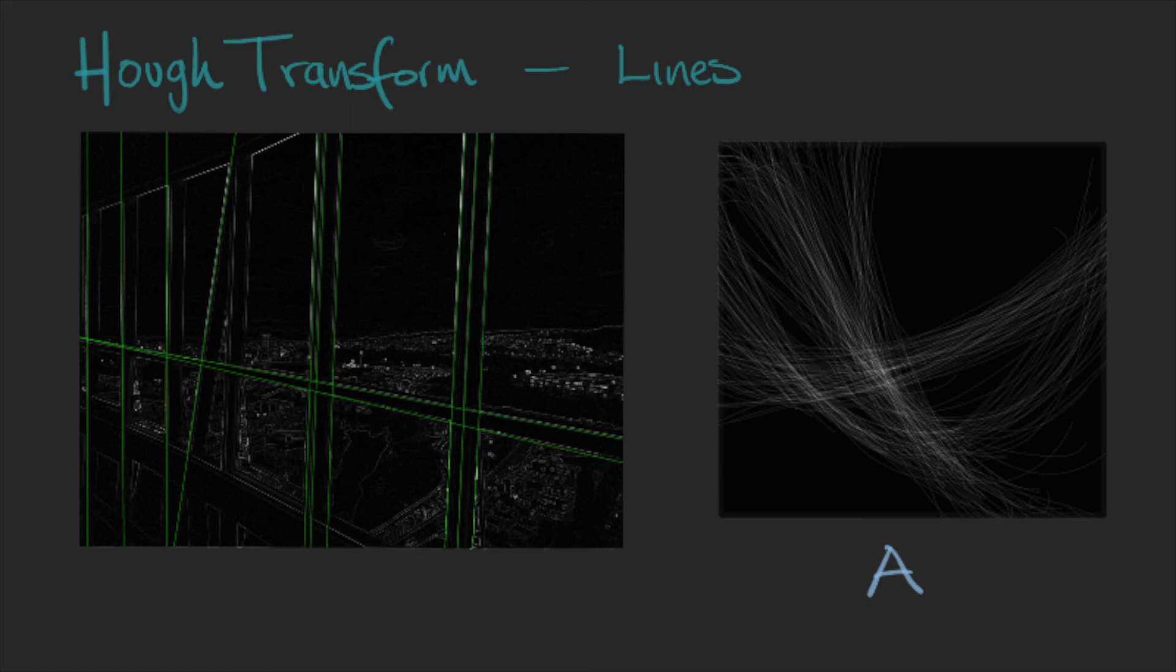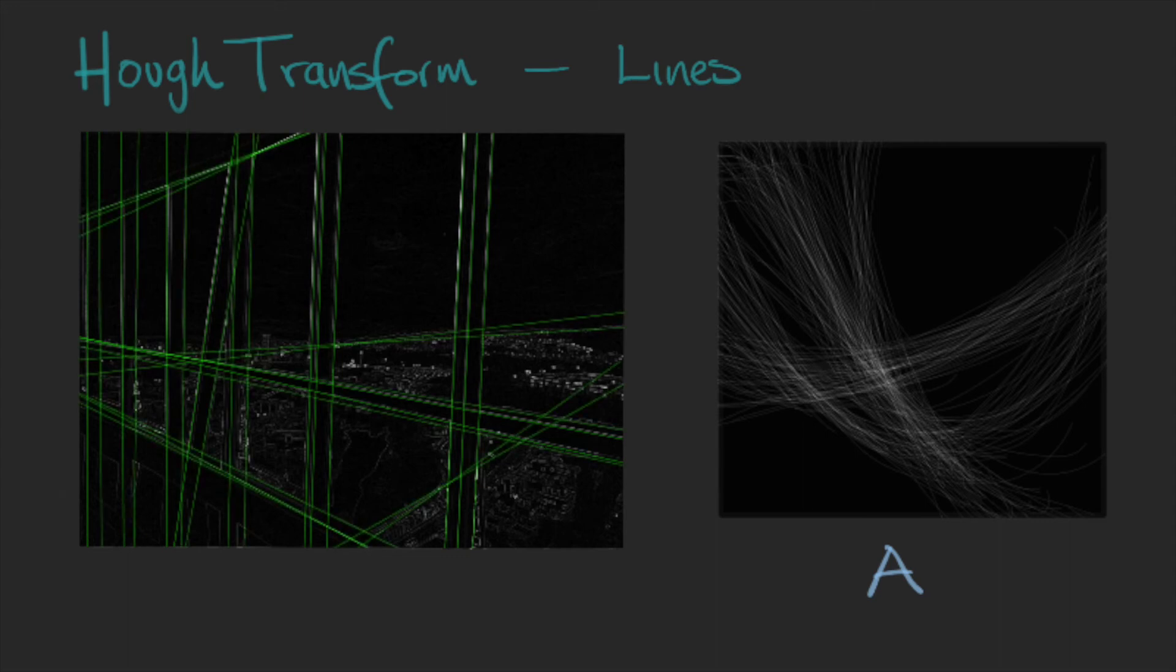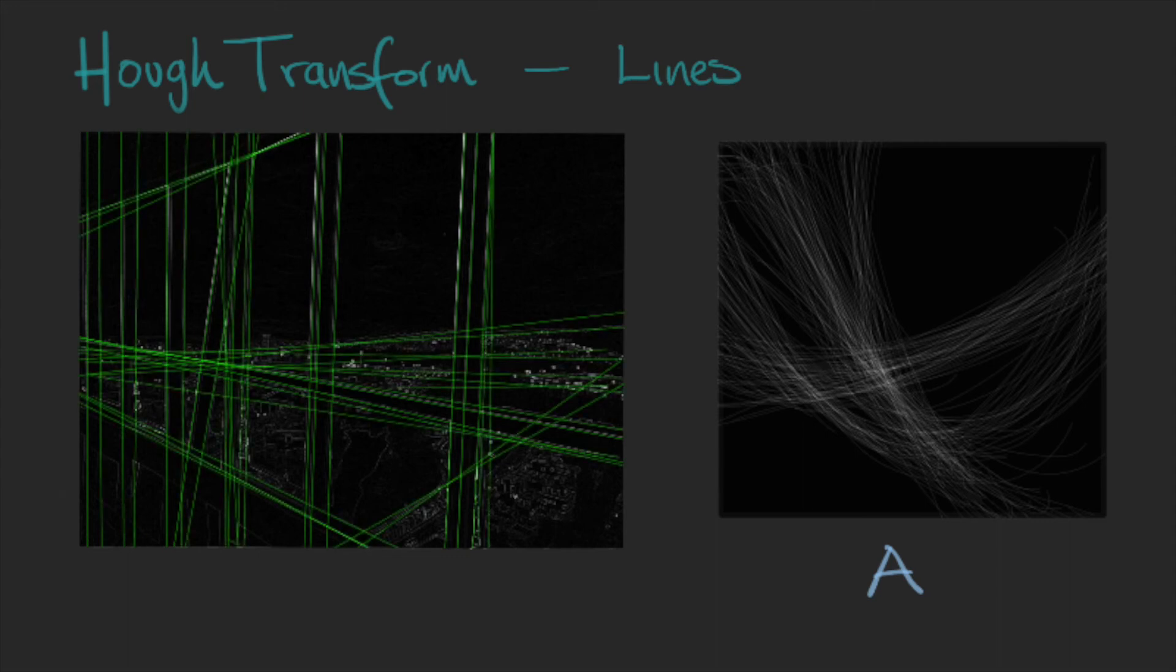So that's the reason why we take the higher values. If we take lower values in the accumulator, more lines will appear in other directions that not necessarily represent the main lines, but in the image there are a set of points that are aligned. So the algorithm will find them.